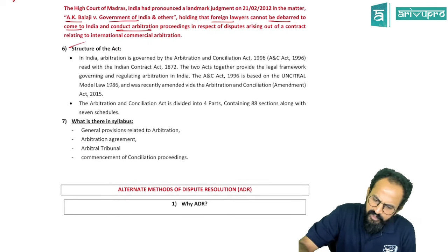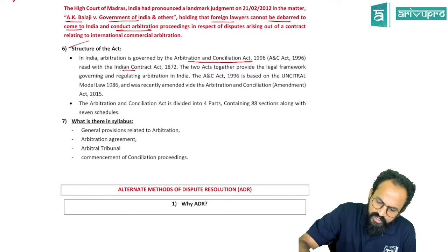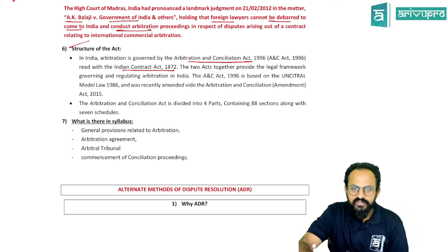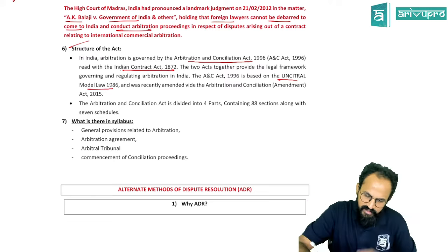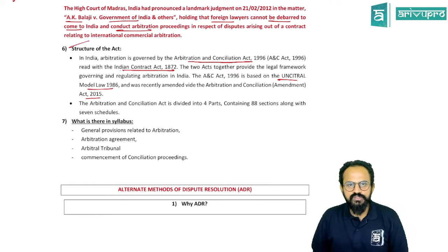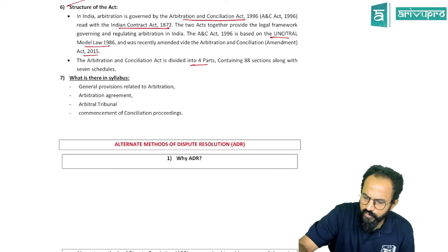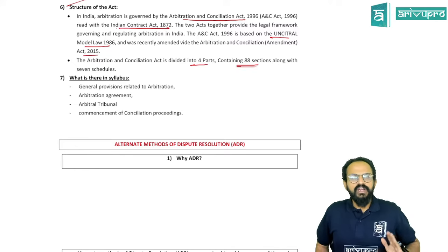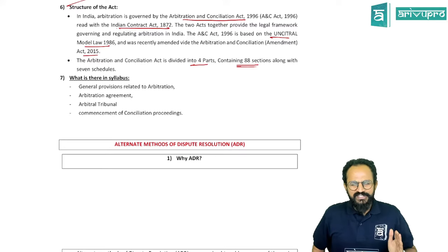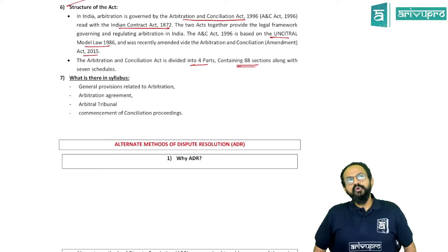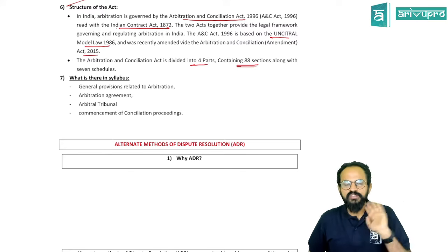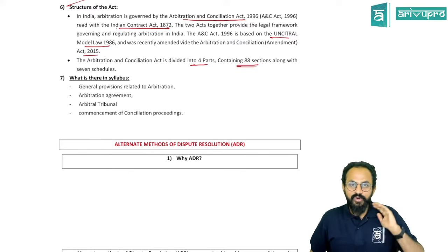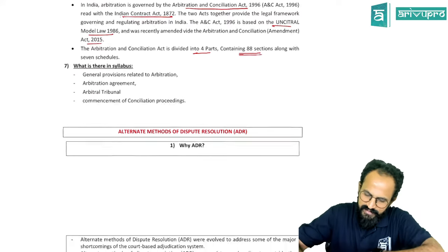The Arbitration and Conciliation Act is also read with the Indian Contract Act because breach of contract comes into picture. It is based on UNCITRAL's model law 1986, and there was an amendment — the Amendment Act of 2015. The act has been divided into four parts containing 88 sections. You will not be studying all 88 sections in detail; the exam focuses more on scenarios and application rather than purely the law part.